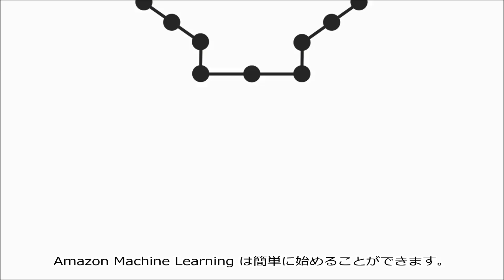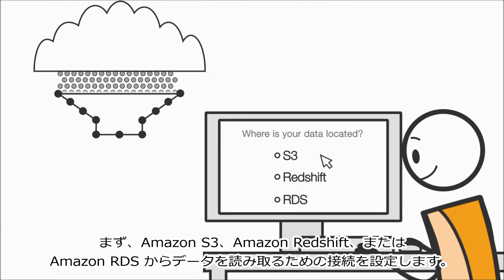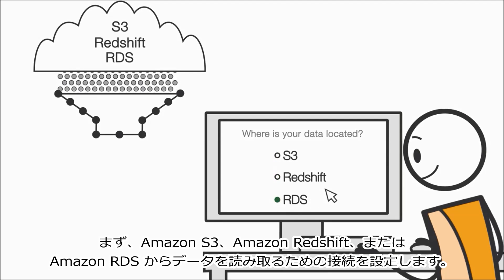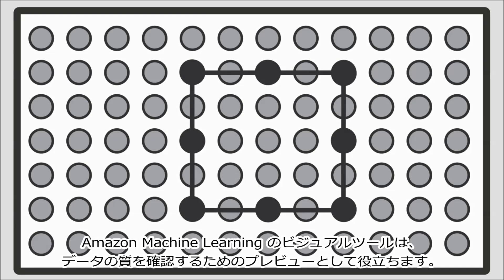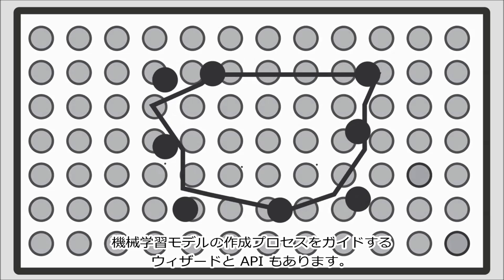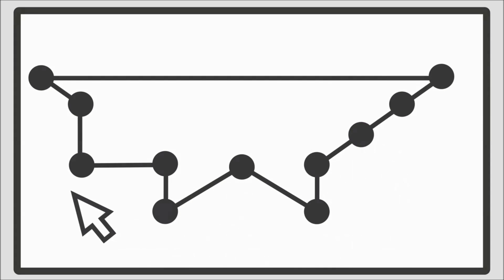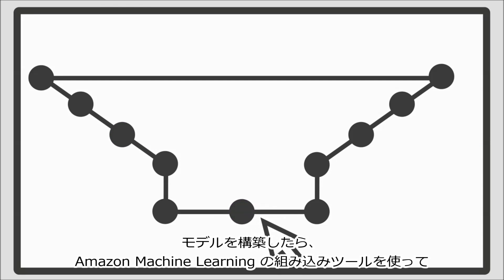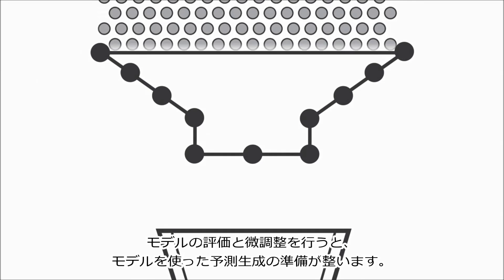Getting started with Amazon Machine Learning is easy. First, you configure a connection to read your data from Amazon S3, Amazon Redshift, or Amazon RDS. Amazon Machine Learning's visual tools help you preview the data to ensure quality, and the wizards and APIs guide you through the process of creating machine learning models. Once the models are built, you use Amazon Machine Learning's built-in tools to evaluate and fine-tune them, and then the models are ready to generate predictions.